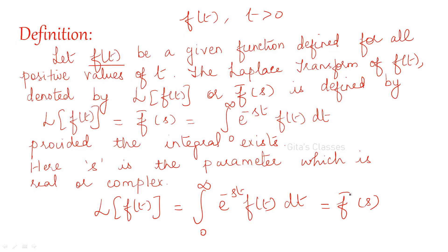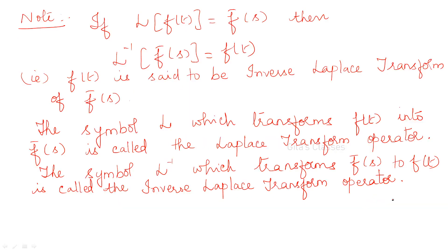So, let us denote it by f-bar of s. L of f of t is transforming the variable t to s. After finding the Laplace transform, you will not have a function of t. Please remember that you will have a function of s only. So, f-bar of s.